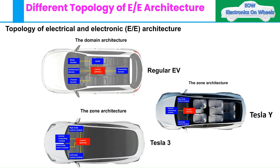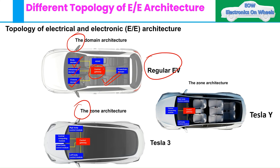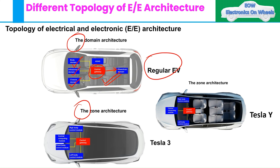We have domain architecture here and zonal architecture here. Regular EVs are still on domain architecture, where you have different domains — body domain, infotainment domain, chassis domain — and then a central gateway, with communication happening between domain controllers. This is how domain architecture works, and regular EVs are working on these.